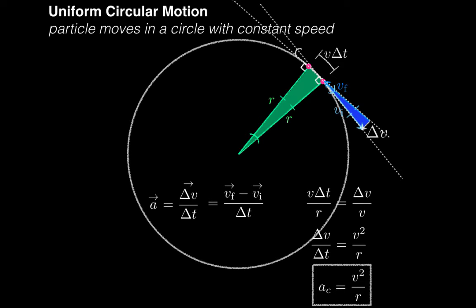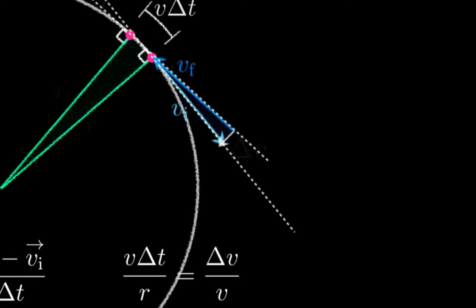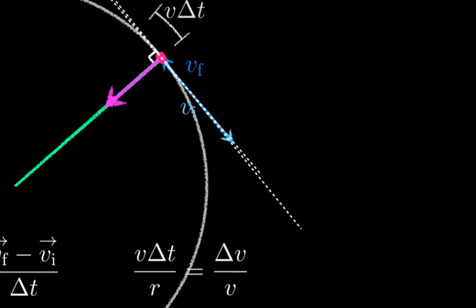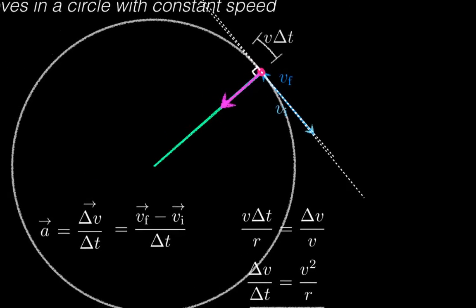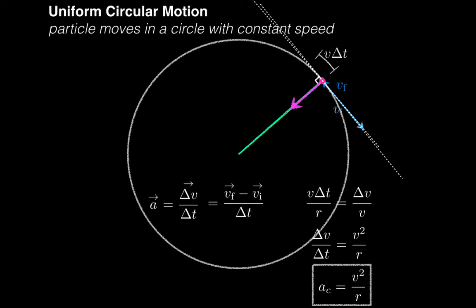The last thing to consider is, what is the direction of the acceleration? Take a look at delta v here. Let me make delta t very small and move delta v over so that it's at the same position as the particle. Delta v is clearly pointing toward the center of the circle, so delta v over delta t would do the same, and so the centripetal acceleration points toward the center of the circle.